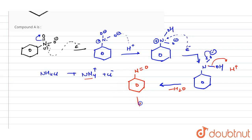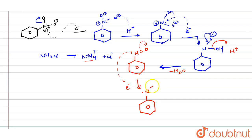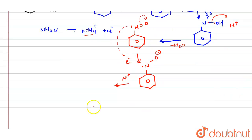In the next step, one more electron comes and attacks the nitrogen. This bond is pulled back toward the oxygen side, so oxygen gets a negative charge and nitrogen becomes a radical. Then this oxygen reacts with H⁺ and is converted into an OH group.